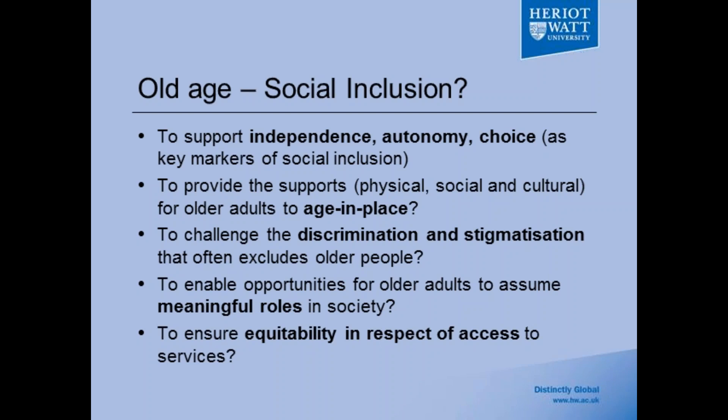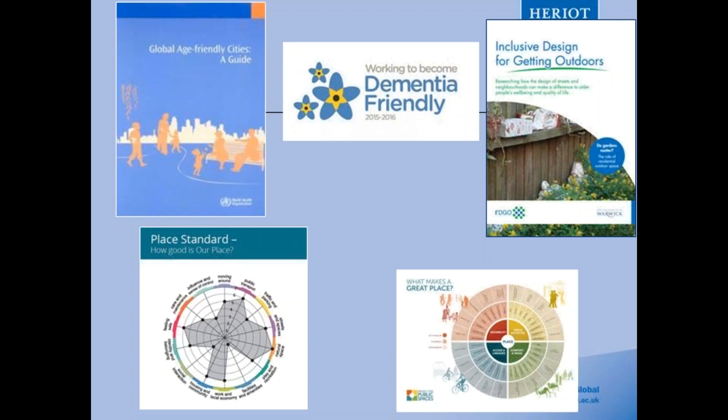Enabling social inclusion for older adults requires addressing issues of autonomy, choice and freedom as key markers of social exclusion. It's about providing a range of physical, social and cultural supports for older adults to age in the community with a high quality of life — challenging discrimination and stigmatization, and creating opportunities for older adults to assume meaningful roles in the community. There have been a number of different frameworks for designing age-friendly communities, and a large number have had social inclusion as a central component.